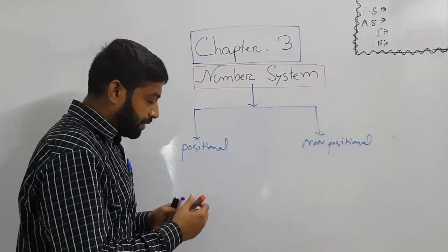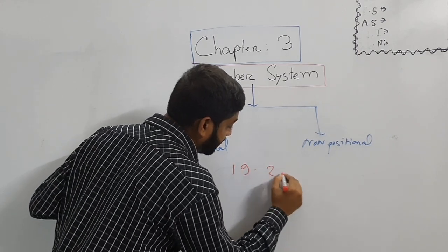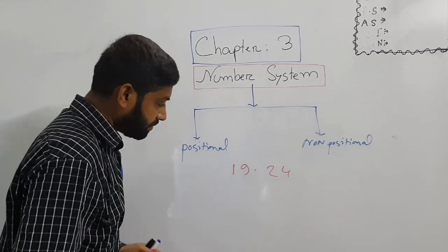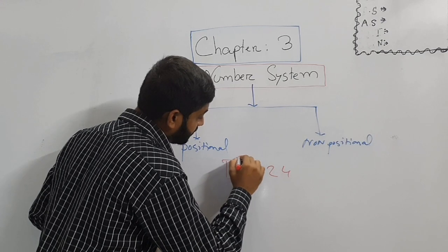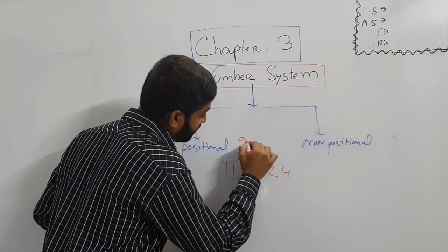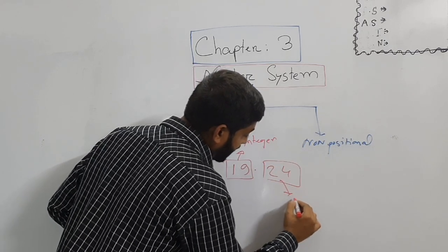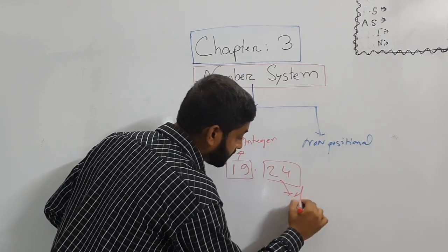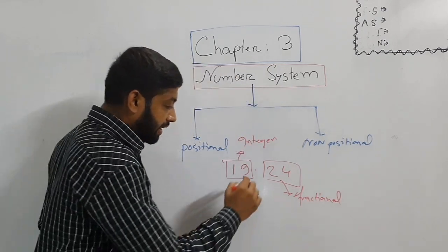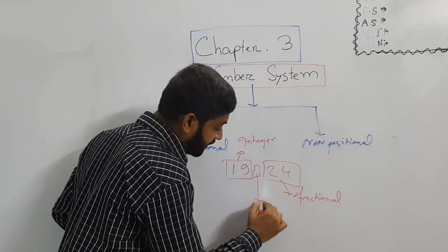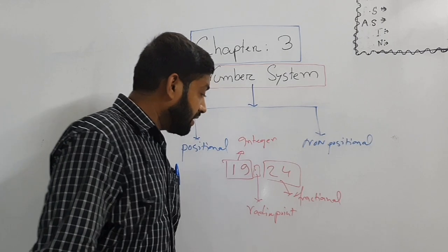In positional number system, we can define it like an example of 19.24. So this portion is integer part and this one is fractional part. At this point, we are going to call it radix point. This way, we are going to form positional number system.